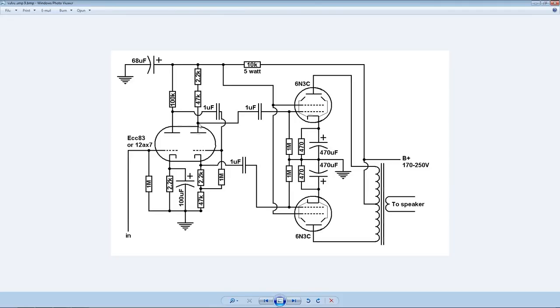So essentially what's going to happen is when our input signal goes positive, this valve will conduct more and this one will conduct less. And when our input signal goes negative this one will conduct less and this one will conduct more. And then it's just put together by the transformer and then sent out to the speaker. Anyway I think we should do some experiments with our phase inverter.